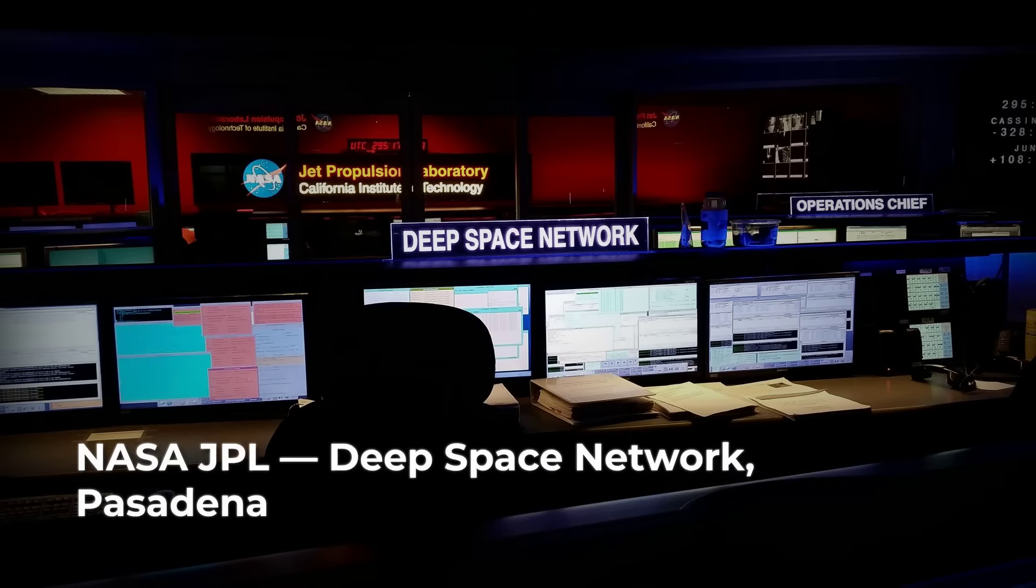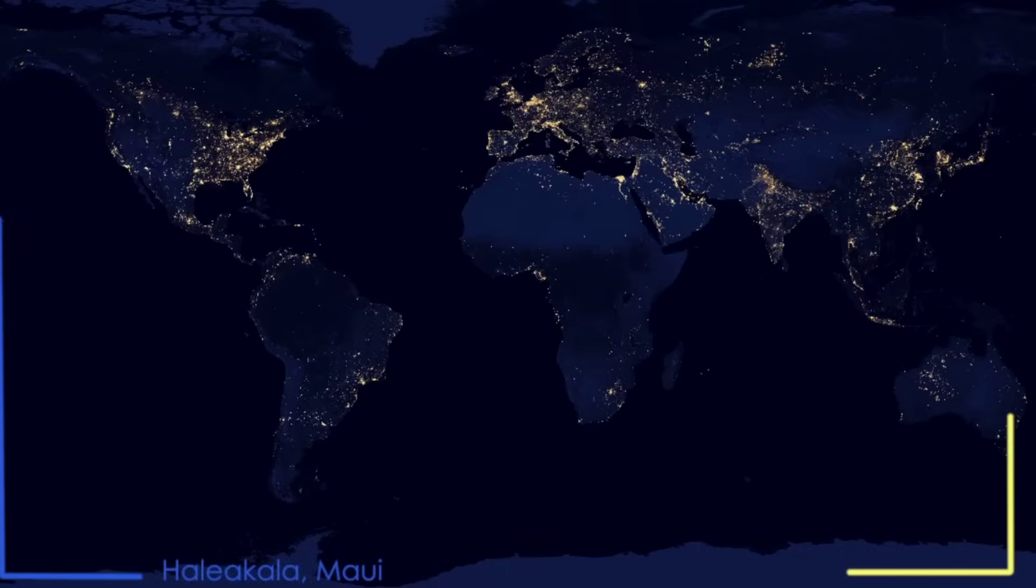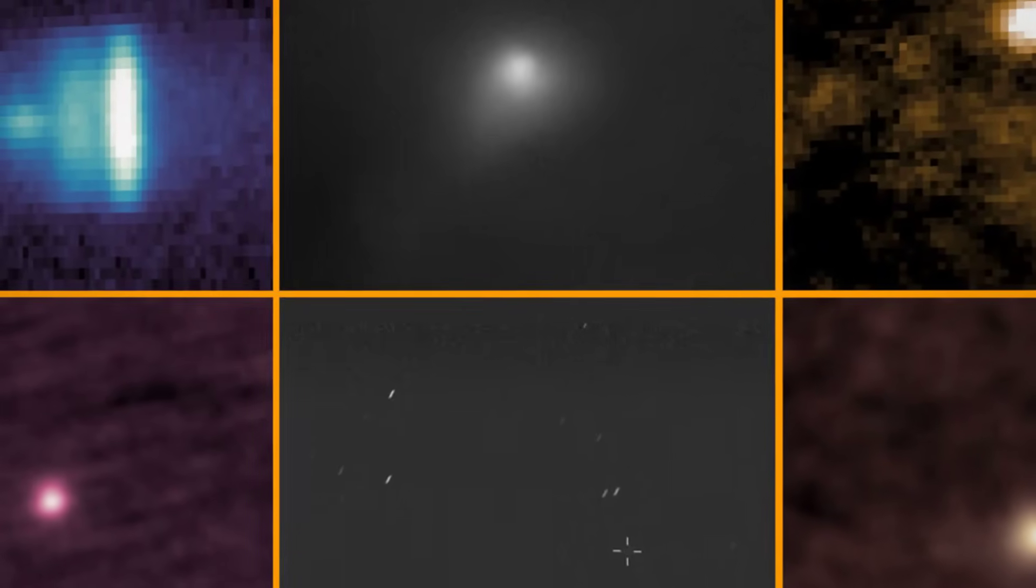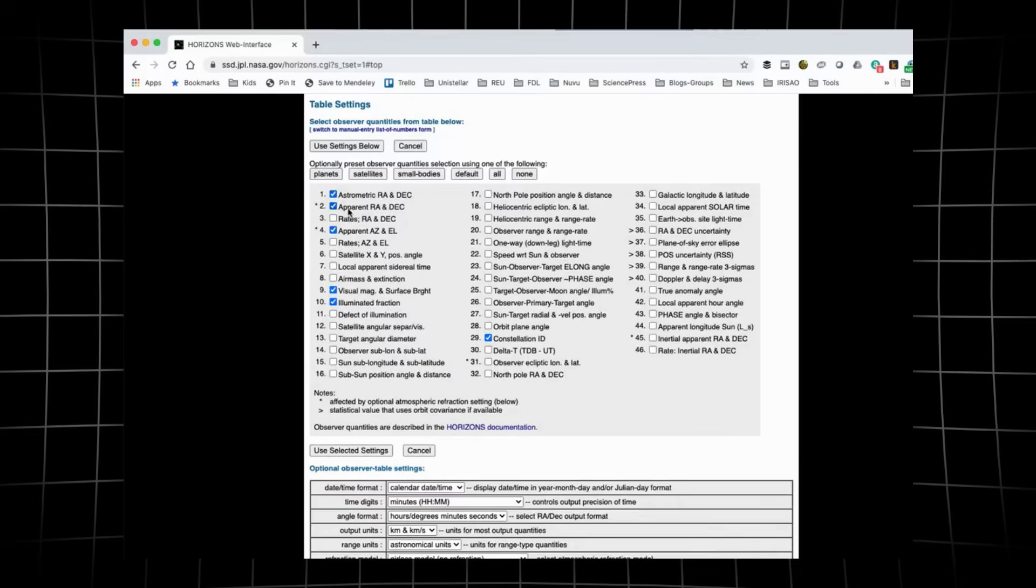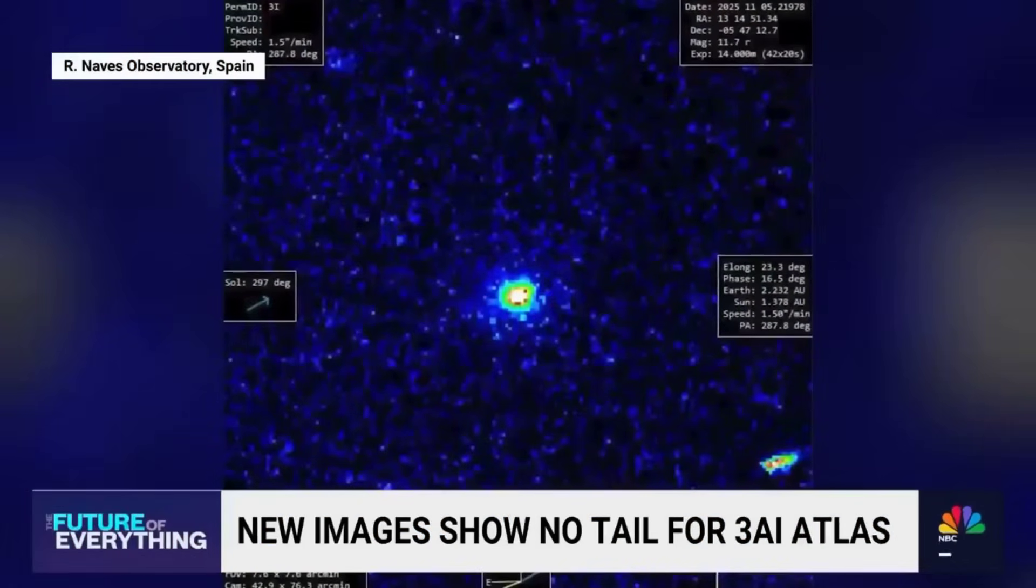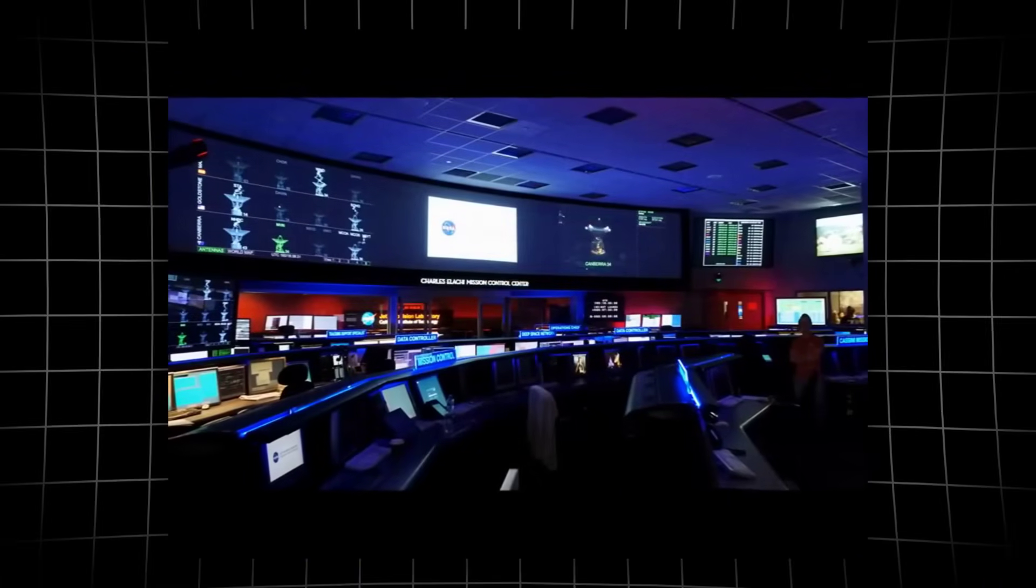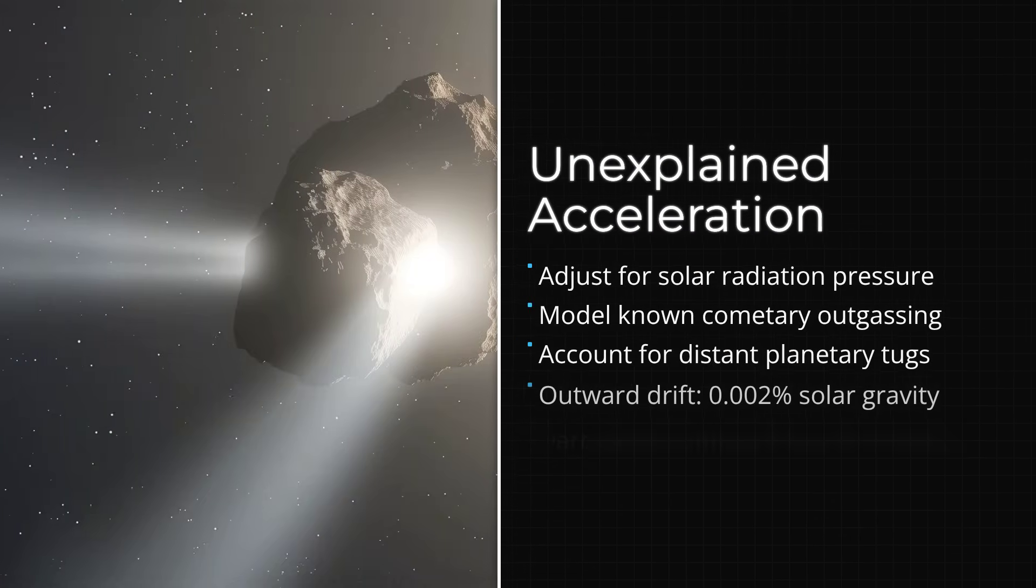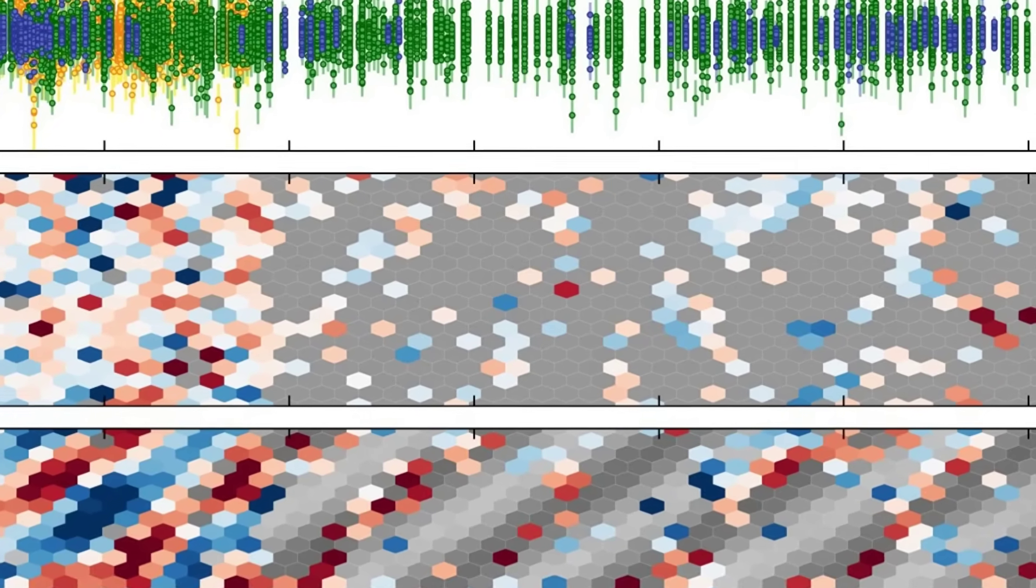NASA's Jet Propulsion Laboratory maintains a running record of 3I Atlas's position, speed, and trajectory. Every new image and measurement is folded into this global dataset. But as the object moves farther from the sun, a stubborn pattern appears in the numbers, one that cannot be dismissed as a trick of the camera or a miscalculation. The equations that describe its path start to drift from what gravity alone predicts. Each update to the official ephemeris requires a small but consistent correction. 3I Atlas is moving outward just a bit faster than gravity should allow, as if something is giving it a subtle push away from the sun. The Jet Propulsion Laboratory analysts, working with data from dozens of observatories, try to account for every known source of error. They adjust for light pressure, known comet outgassing, and even the influence of distant planets. Yet the residuals, the differences between prediction and observation, do not vanish.